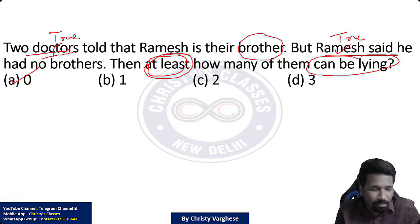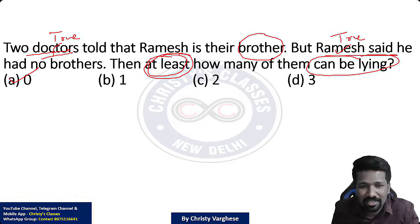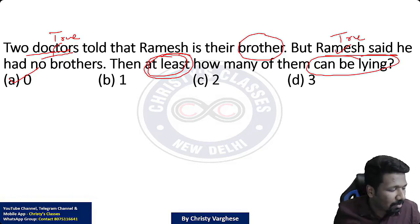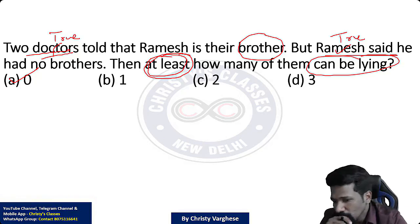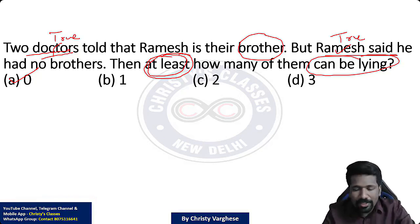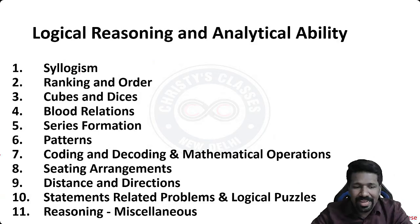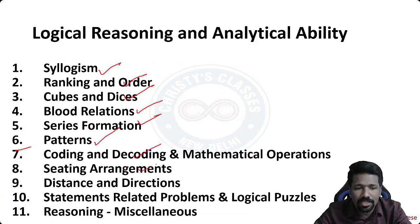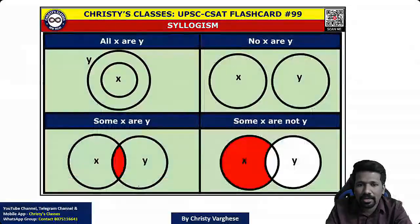Statement-Related Problems include statement-and-conclusion type questions where you need to understand converse, inverse, contrapositive, and negation. There were also logical puzzles in 2024 where any puzzle can be created and you need to solve it. These are the major reasoning areas. We are devoting 12 lectures plus a doubt-clearing session to reasoning alone, starting tomorrow with Syllogism. We are beginning with reasoning to build confidence with non-math topics before moving to math topics.